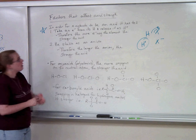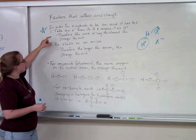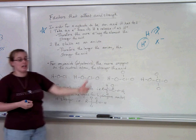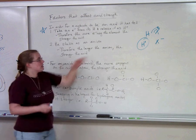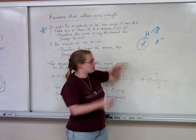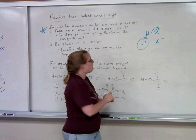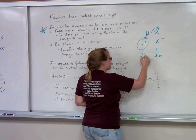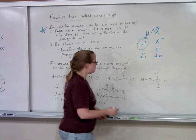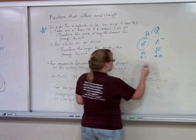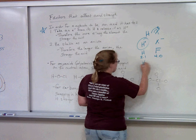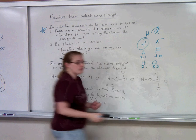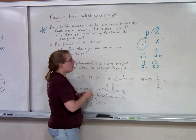Any situation that makes this electron transfer more likely will make the acid stronger. One factor is electronegativity: if X is more electronegative, it is more likely to take that electron, because that's the definition of electronegativity. For example, fluorine is the most electronegative element at 4.0, while hydrogen is only 2.1 — a huge difference, so fluorine will be hogging that electron. Compared to oxygen at 3.5, oxygen can still take the electron and be an acid, but it won't be as strong.